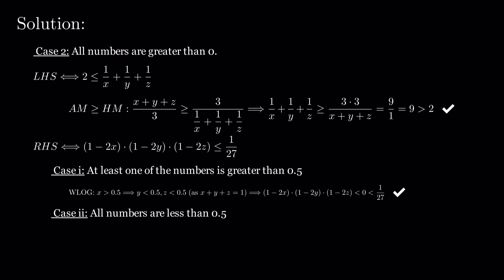Case 2, in which all three numbers are less than 0.5. By the geometric mean-arithmetic mean inequality, our desired inequality is proven.